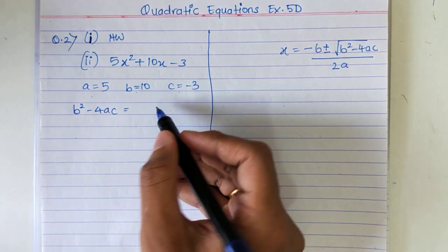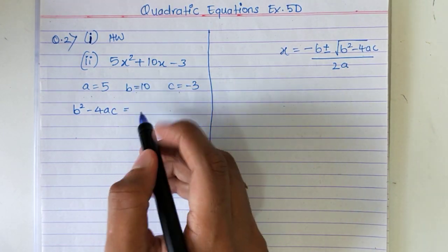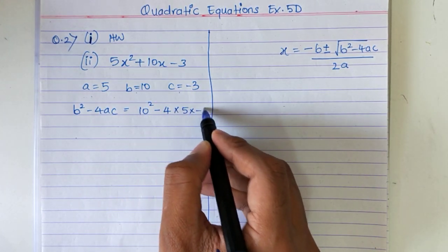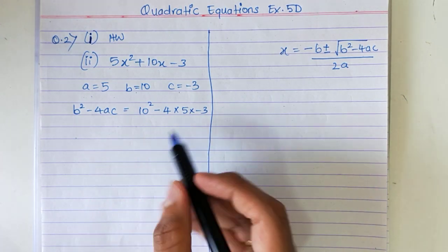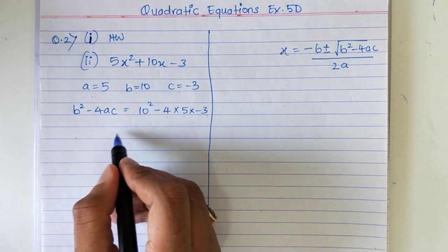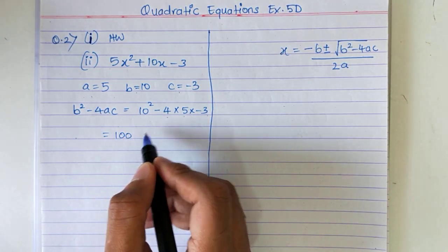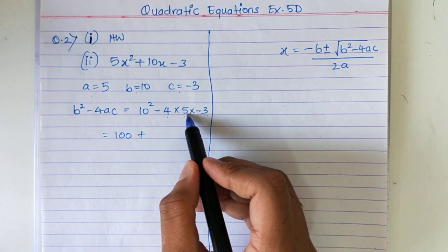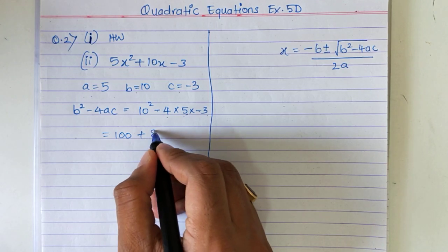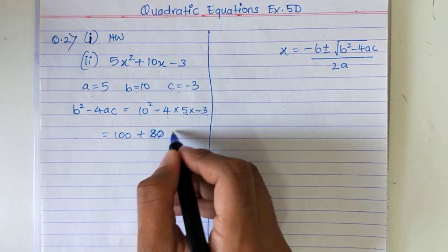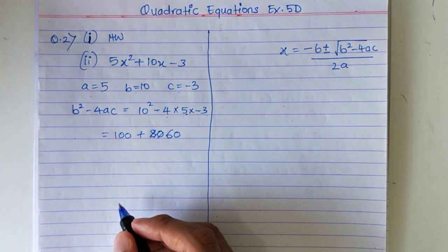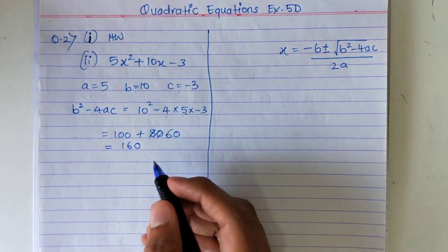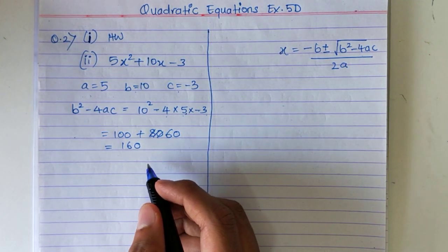What is b squared minus 4ac? b squared minus 4ac: 100 minus, minus will become plus 4ac. So you will get this as 160.